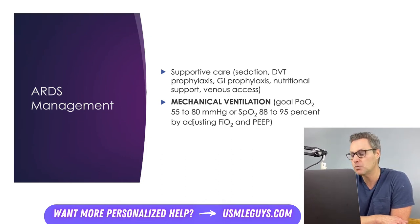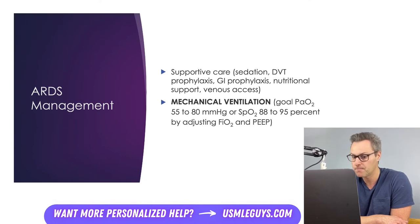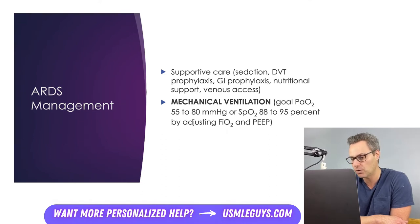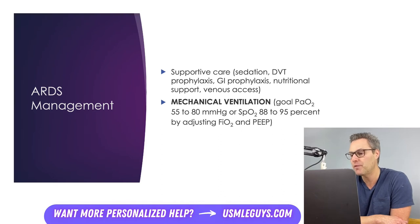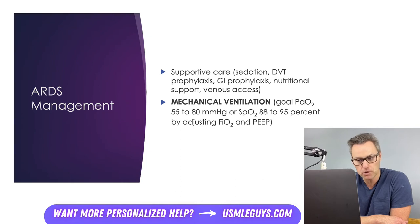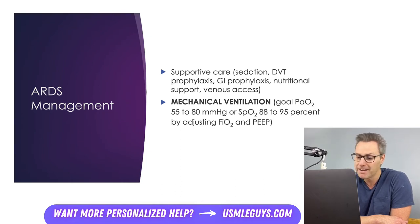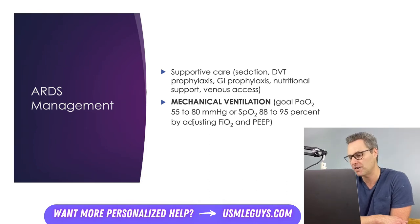Decreased lung compliance is a prominent feature of ARDS. Having all that proteinaceous fluid and cytokine leakage into the alveoli leading to pulmonary edema is going to increase the pressure that ventilation is fighting against. To combat this, you're going to set your tidal volume low and compensate by increasing the respiratory rate so you don't build up too much CO2.